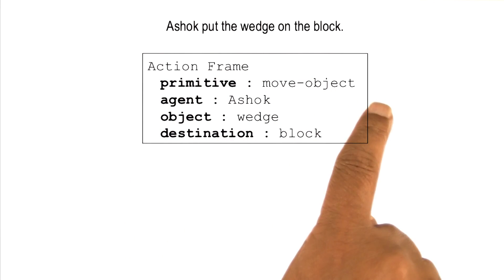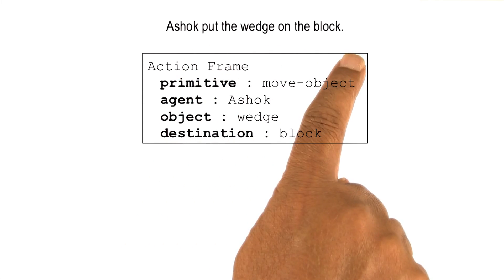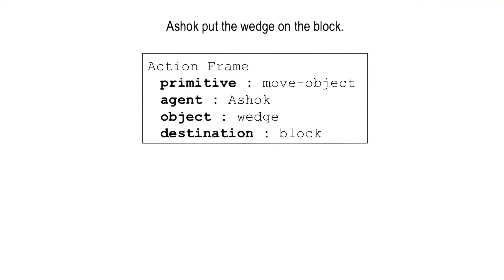If I would ask the AI agent, did Ashok's hand move when he was putting the wedge on the block, I would expect the AI agent to say yes. Because that is what happens when people move the wedge to the block. They grasp their hands around the wedge, they move their hand, and then they release their fingers.